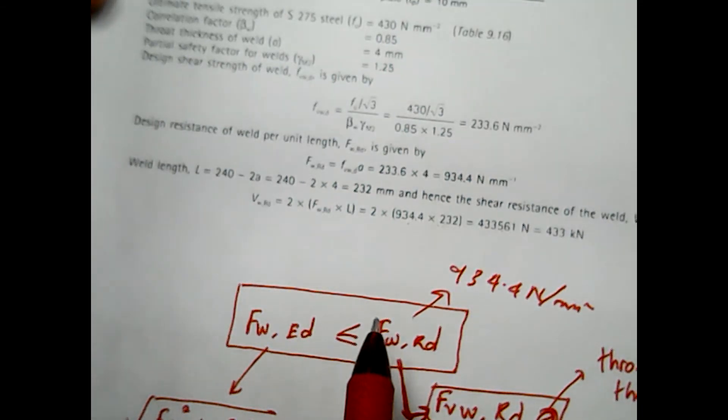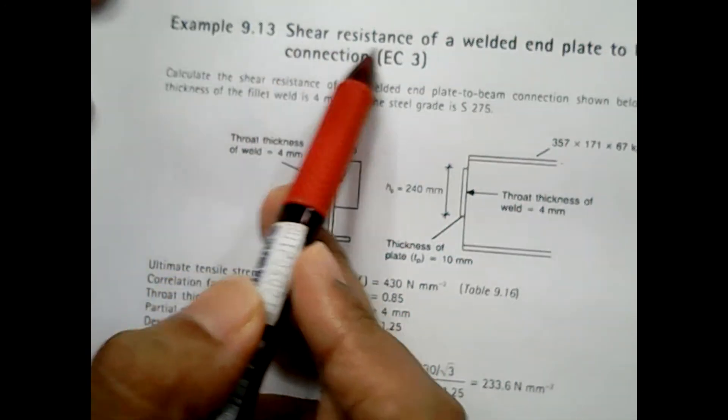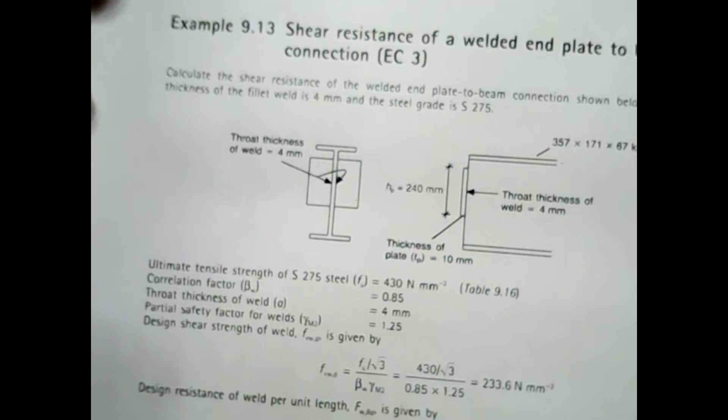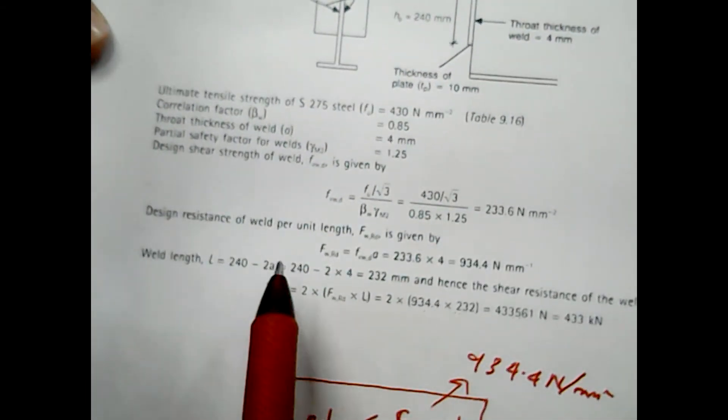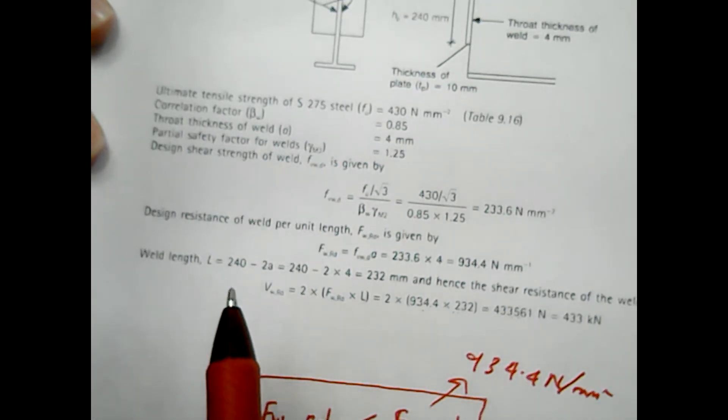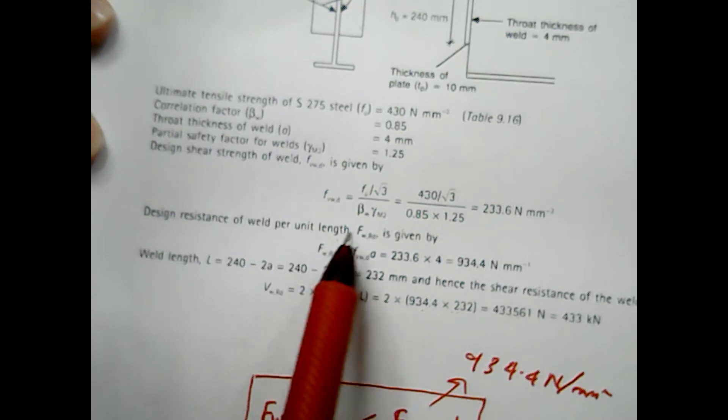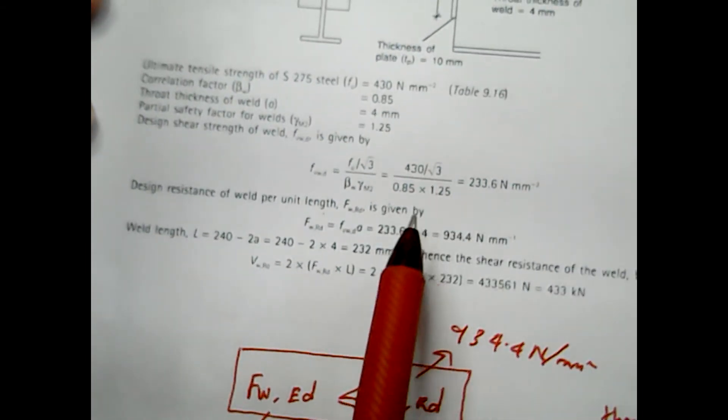In this case the question asks you to determine what is the shear resistance that can be resisted by this particular connection. To get the shear resistance, you need to multiply the design resistance of weld per unit length by multiplying it with the weld length.